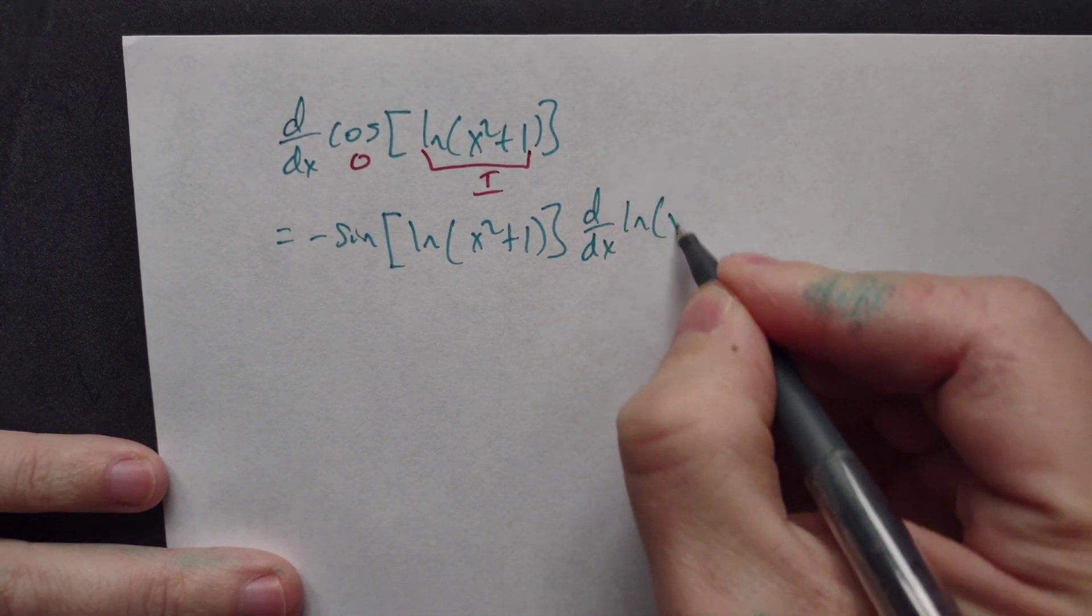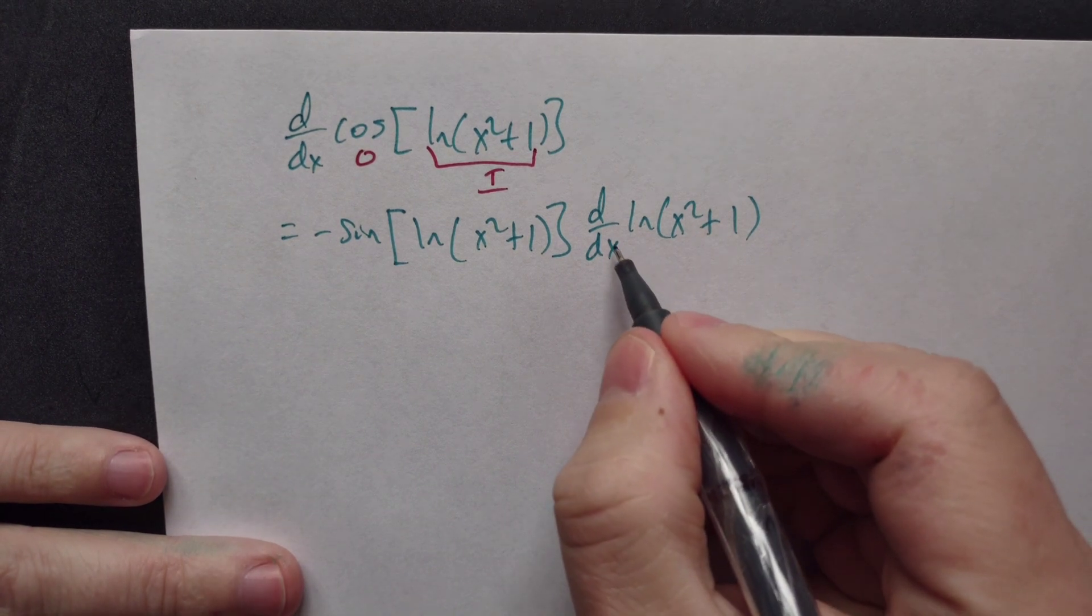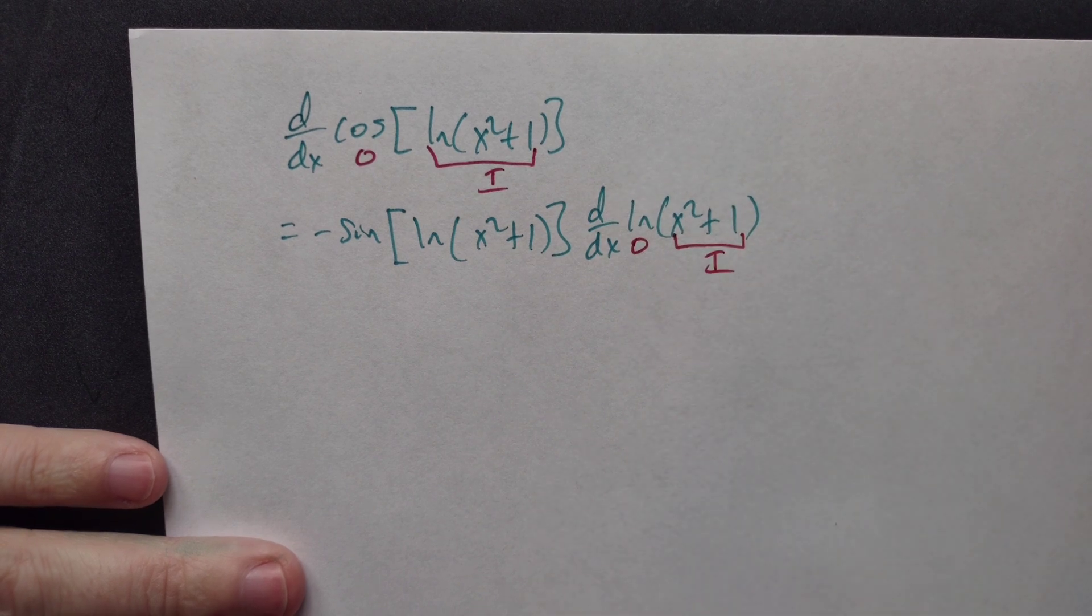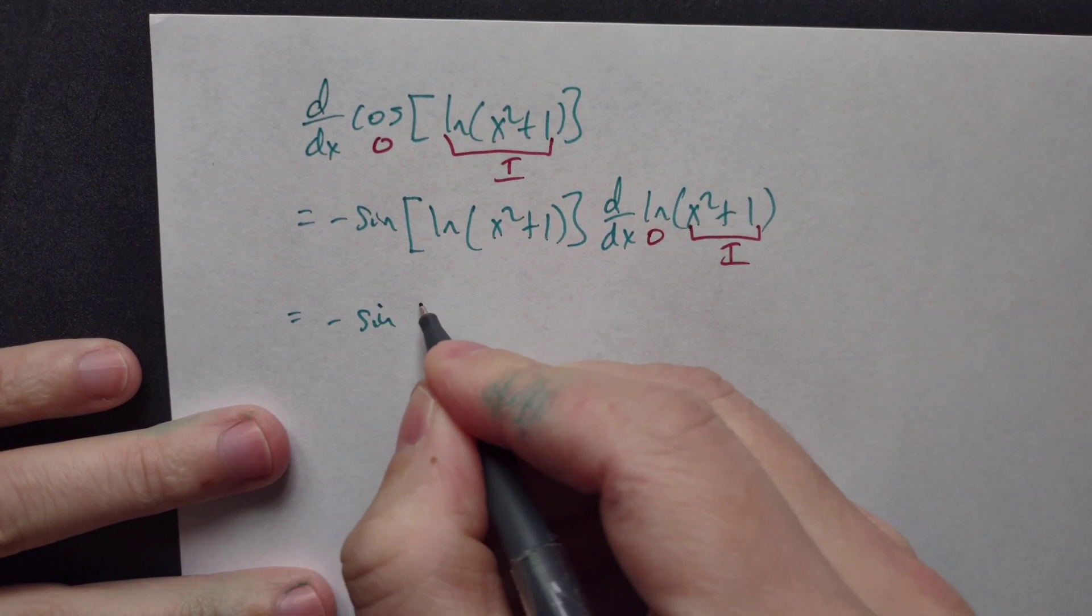Now you have to be careful with respect to this new derivative. This is the outside and now this is the new inside. You've got that negative sign, and then copy this ln of that x squared plus one and then multiply by that derivative.